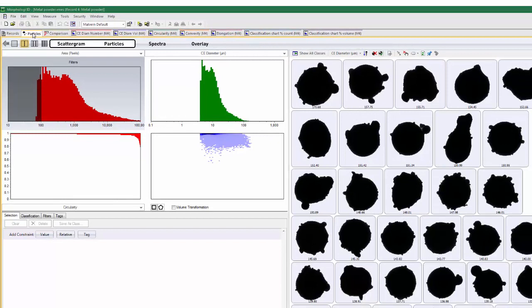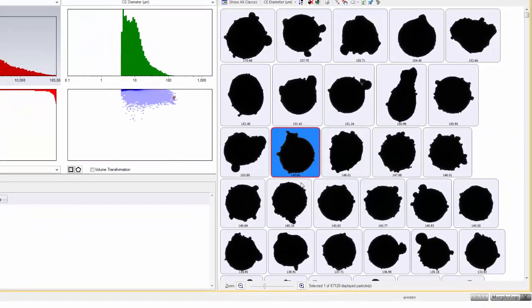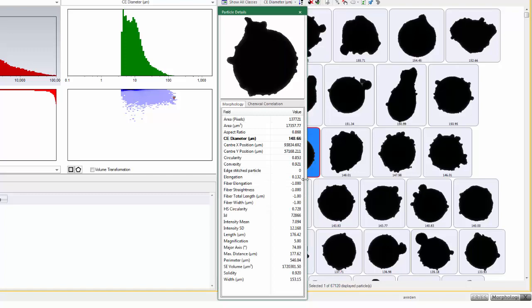The particles tab shows the individual particle images from the dispersed sample. More than 20 size and shape parameters are calculated for each particle, and these can be viewed in the particle details.